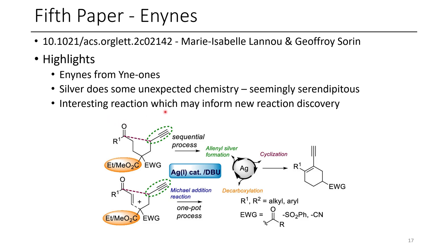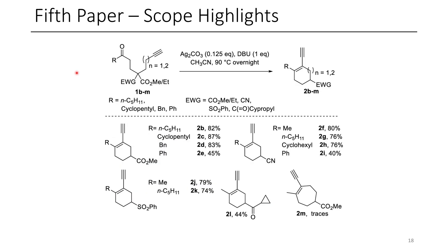I think this reaction is pretty cool, and it may inform some new reaction discovery, because silver does a lot of neat chemistry that often gets overlooked — people use silver to just drive SN2 reactions to completion quite often. The scope of this reaction is relatively good. They have relatively low silver loading, which I thought was nice. In addition to having diester groups in this position, they can also have other electron-withdrawing groups in addition to a 1-ester, which ends up getting removed in the product.